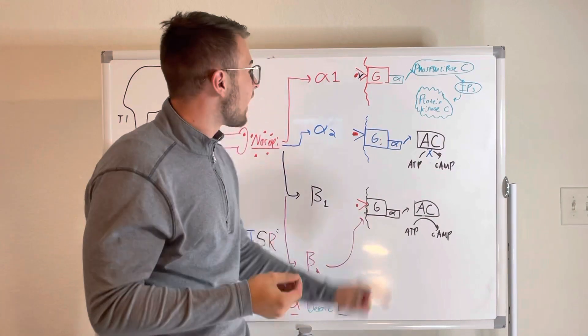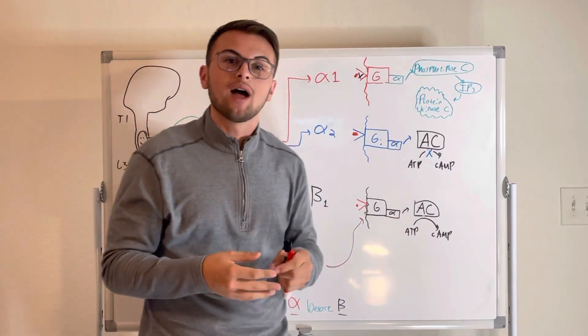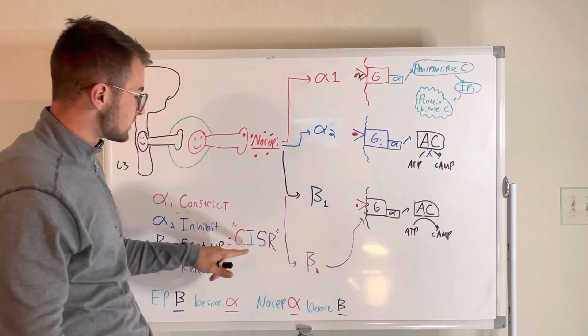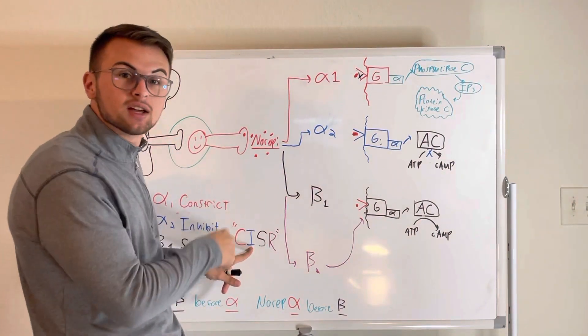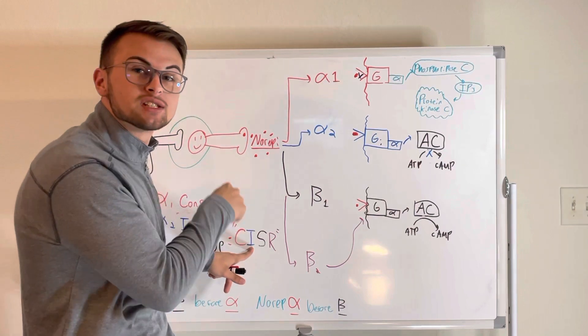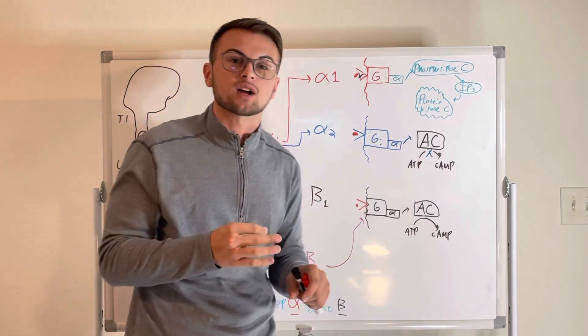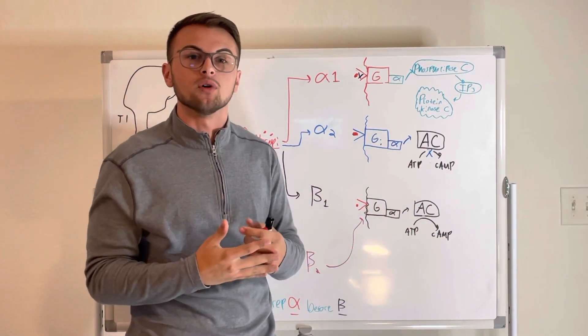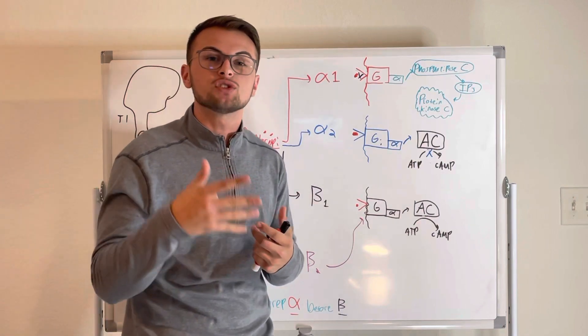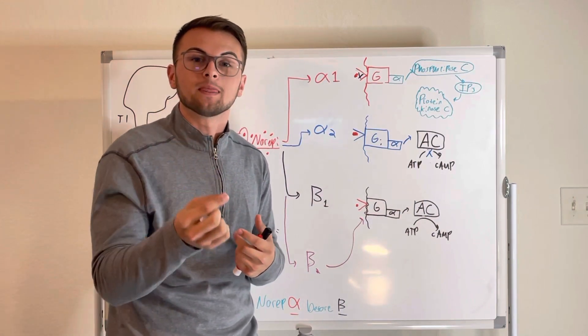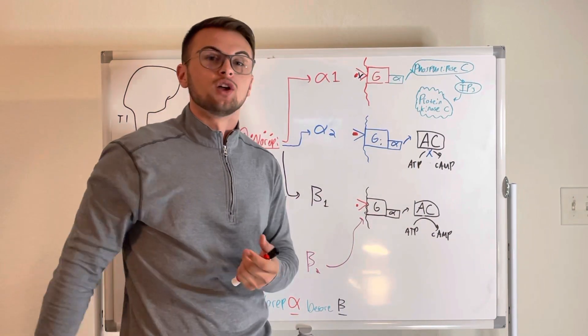Now, what about alpha-2 receptors? Well, alpha-2 inhibits. Specifically, it inhibits the release of norepinephrine. So this is a concept that confuses a lot of people, and what we need to know is that an alpha-2 agonist will result in the release of less norepinephrine.